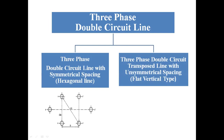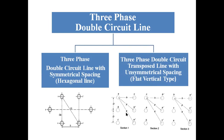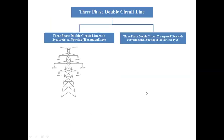For the hexagonal type line, we have two transmission lines placed side by side and the conductors form a perfect regular hexagon. For the flat vertical type or unsymmetrical transposed double circuit line, we have two parallel lines with three sections — section one, two, and three.